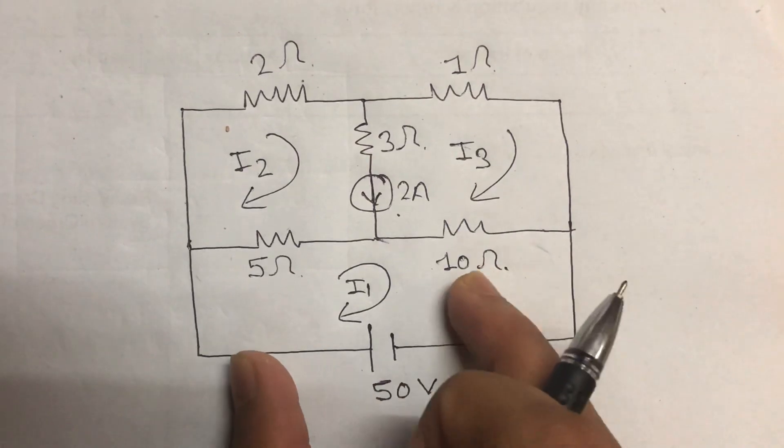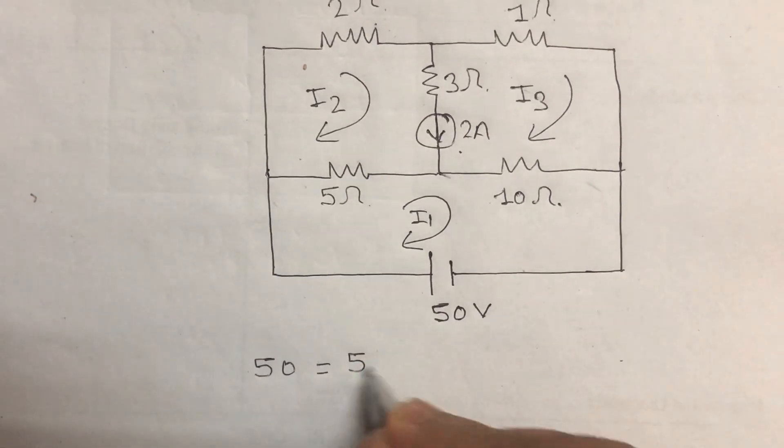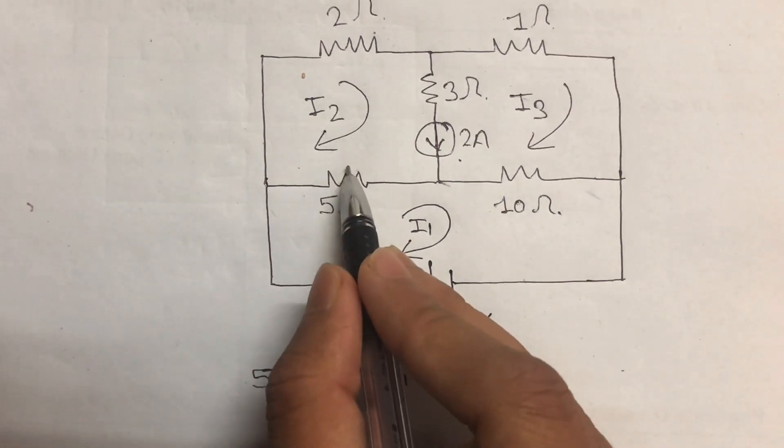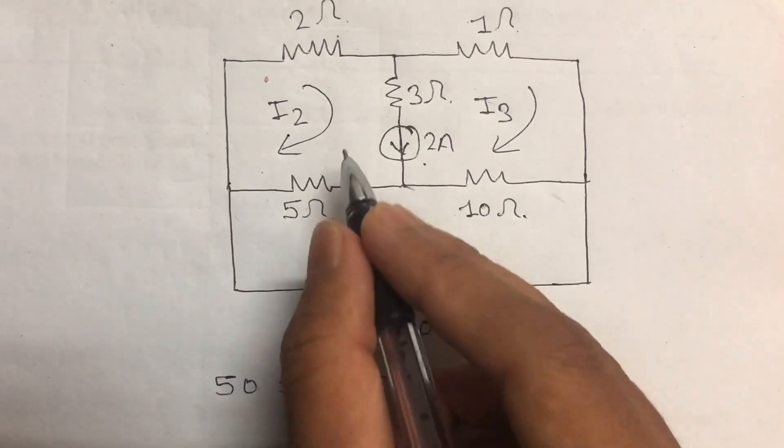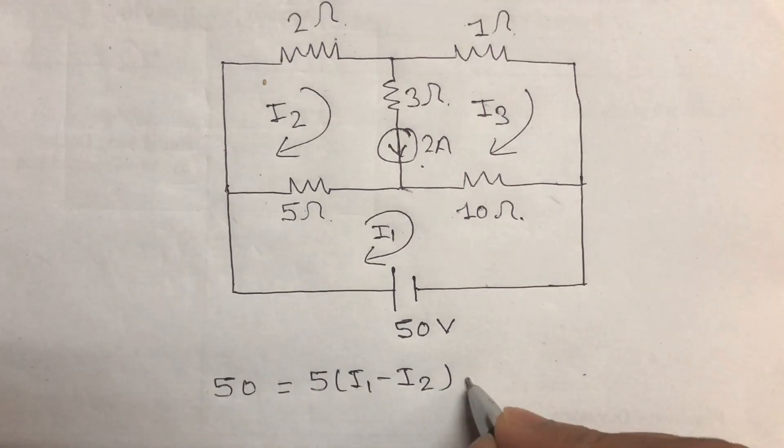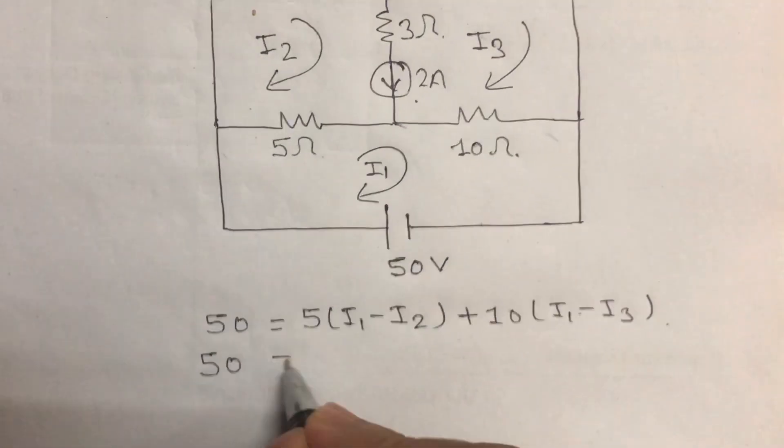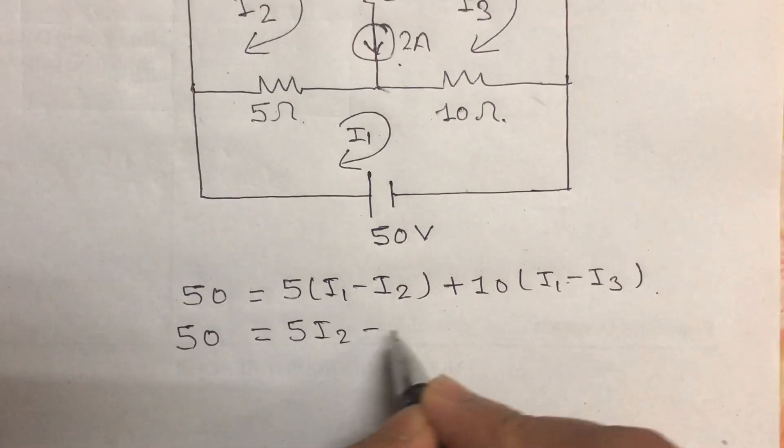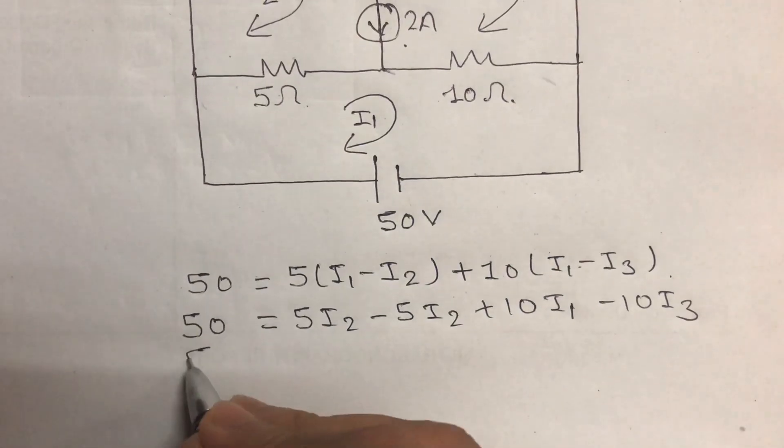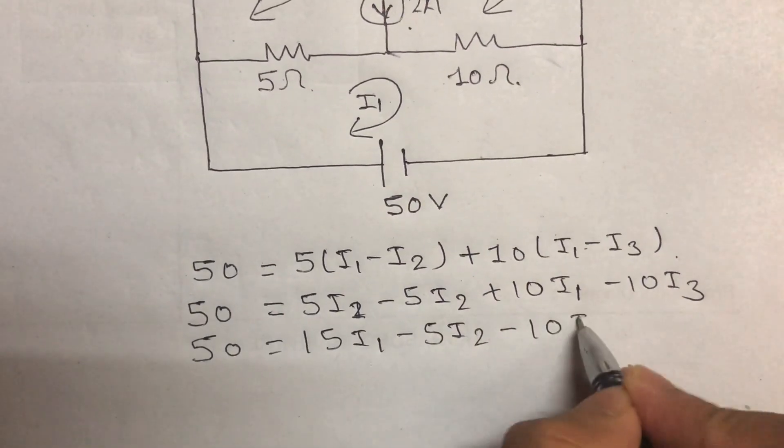Now writing the equation: 50 equals 5(I1 minus I2) plus 10(I1 minus I3). So 50 equals 5I1 minus 5I2 plus 10I1 minus 10I3, which gives 50 equals 15I1 minus 5I2 minus 10I3. This is equation 1.